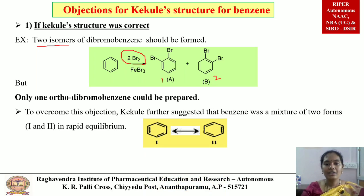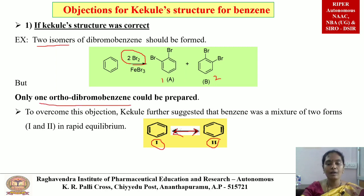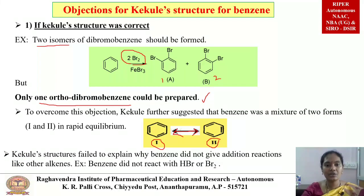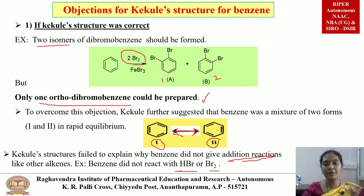Kekule proposed that benzene was a mixture of two forms present in rapid equilibrium — that is why we represent these structures with a double-headed arrow. Because the two structures interconvert rapidly, only one orthodibromobenzene is formed. The second objection is that Kekule's structure failed to explain why benzene does not undergo addition reactions like other alkenes. Although benzene is also a cyclic alkene, it does not react with HBr or bromine, and Kekule's structure could not explain this.